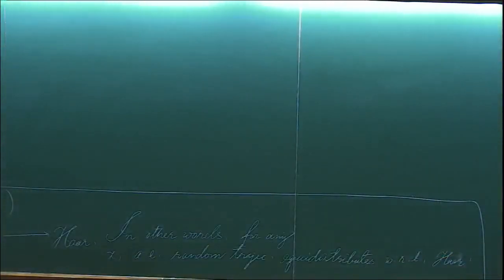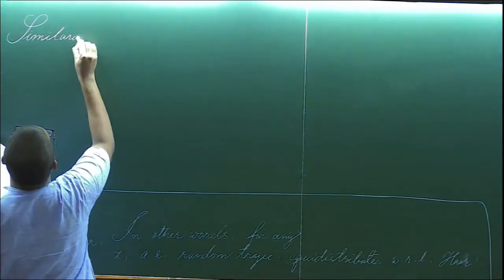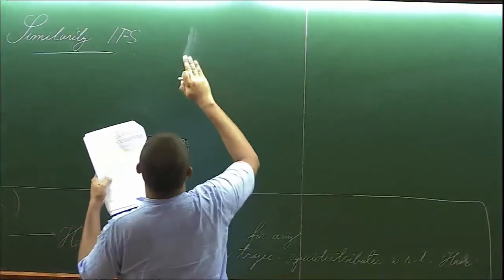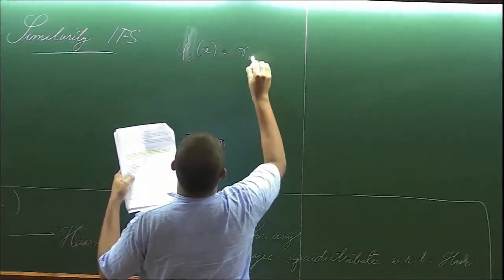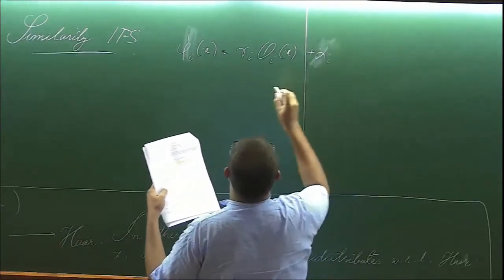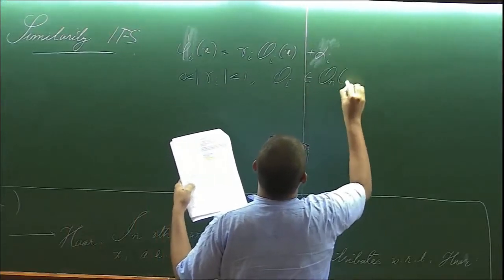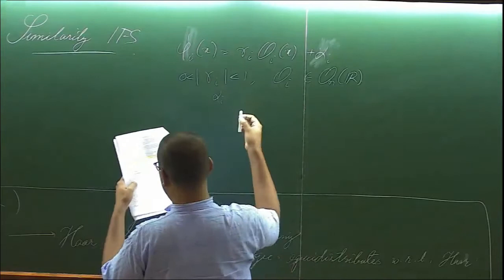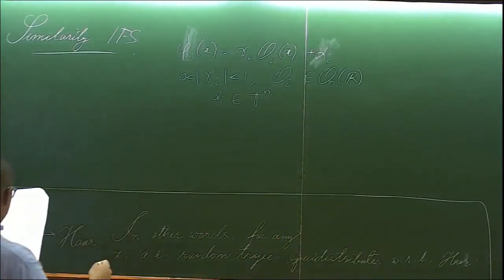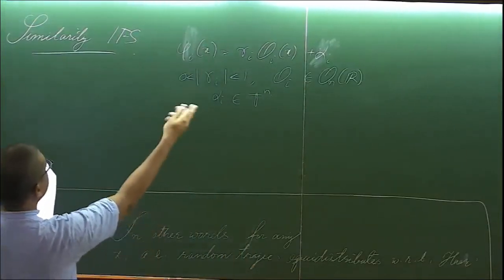By a similarity iterated function system IFS, we shall mean a finite collection of maps. Let's denote by phi_i(x) as ri times some Oi(x) plus alpha_i, where each ri lies between 0 to 1, Oi is orthogonal and alpha_i is a vector in the torus. So by a similarity IFS, I mean a finite collection of maps of this form.